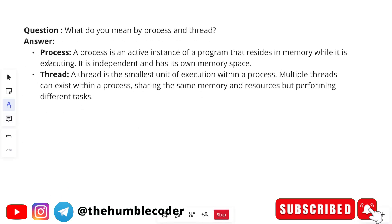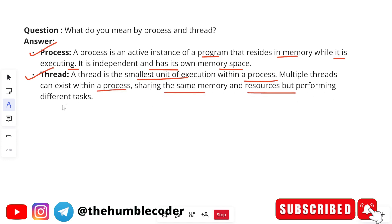Next is the external storage class specifier — it refers to a variable or function defined in another file or function. Next is the register storage class specifier — it suggests to the compiler that the variable should be stored in a CPU register for faster access. Moving on: what do you mean by process and thread? This is a question from operating systems. A process is an active instance of a program that resides in memory while it is executing; it is independent and has its own memory space.